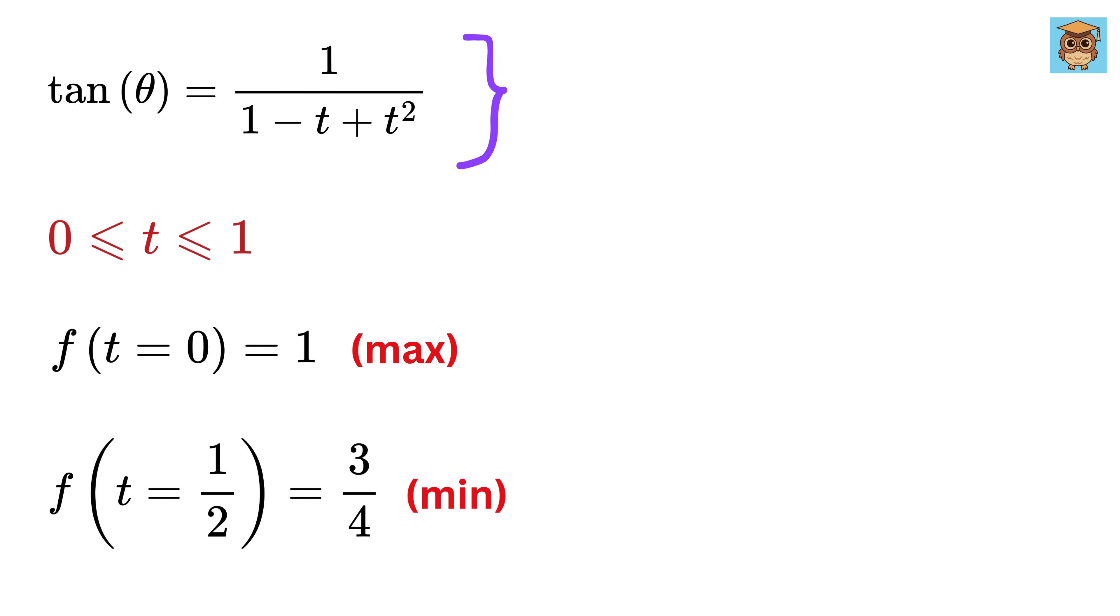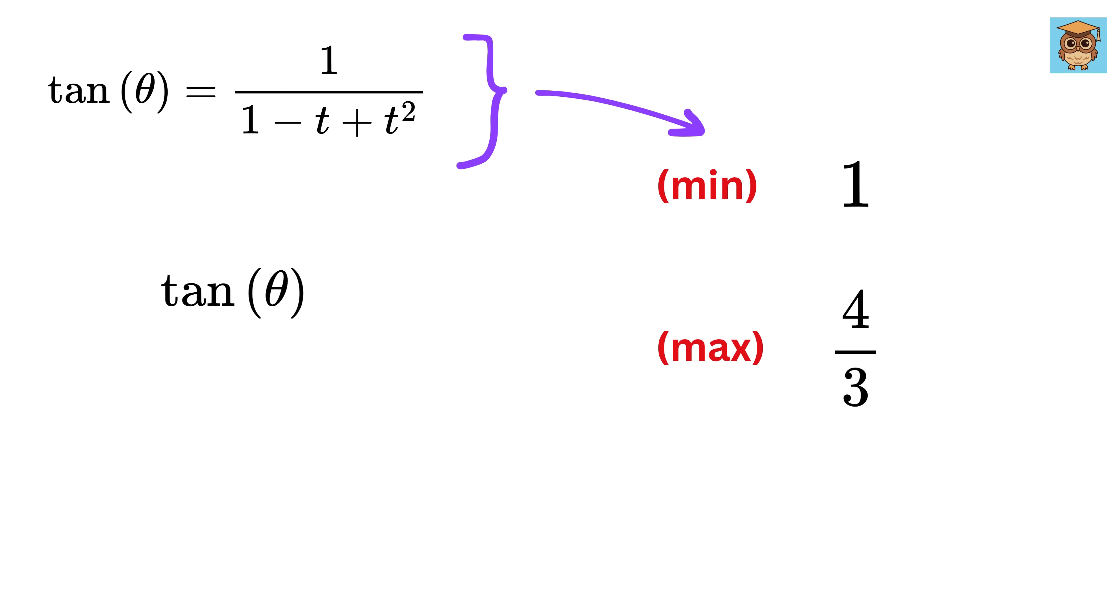So if we reverse this, then the minimum value of this function will be 1, and the maximum value of this function becomes 4 over 3. This means the tan of theta is between 1 and 4 over 3.